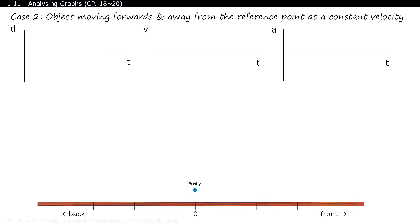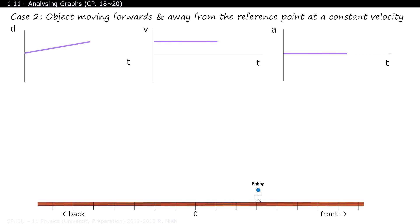Okay Bobby, I want you to walk forwards at a constant velocity. On your marks, get set, go! You can see that on the position-time graph the slope is positive. And if you look at the velocity-time graph, its slope is at zero because he's traveling at a constant velocity.